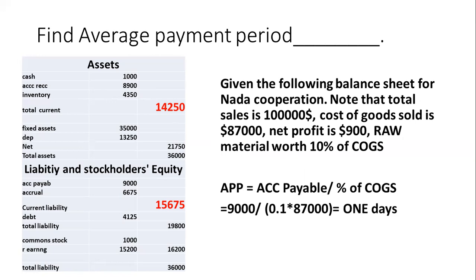The other side is the average payment period — how long it takes to pay the people you buy products from. This represents 10% of COGS, and COGS is $87,000. Accounts payable from the liability section is $9,000. The result shows it will take only one day — meaning suppliers are very tough and you must pay within one day of purchasing.